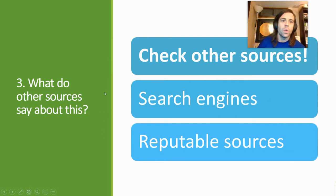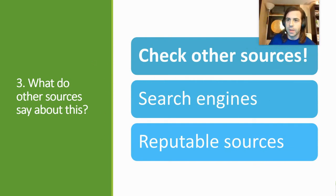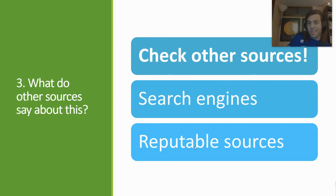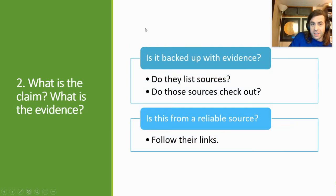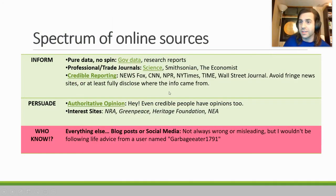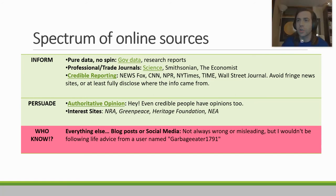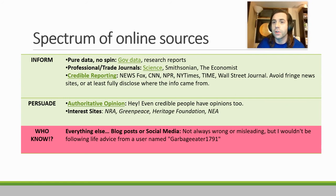Which leads us to our last question: what do other sources say about this information? We need to check out other sources — get on our search engine and look at some of these other sources we can find. Just because Fox News says it doesn't mean it's solid gold. Same thing with CNN, same thing with NPR. If all of the news organizations are kind of reporting on it, then we can think — okay, this is gaining traction. It's so important that you diversify the type of information you're watching and getting from. Don't just rely on Jake from Twitter.